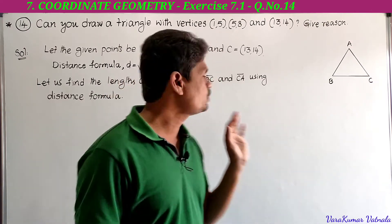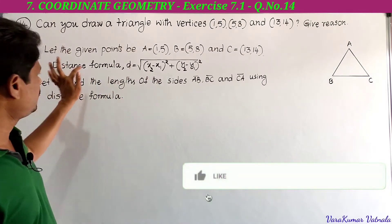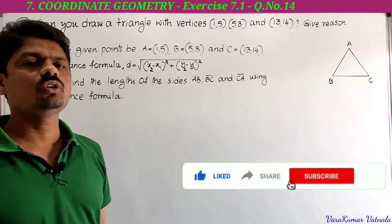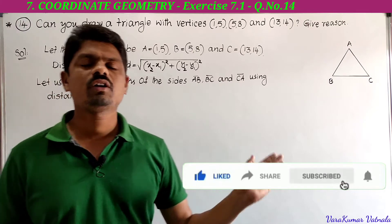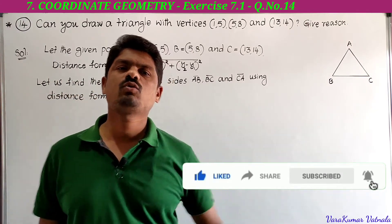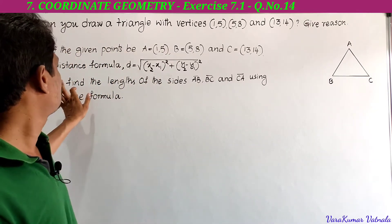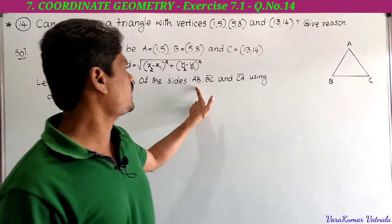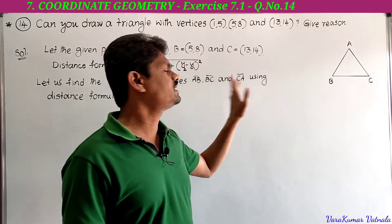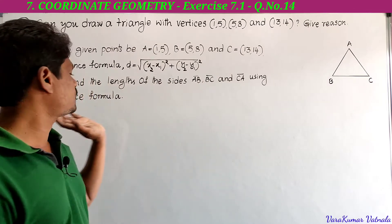Using the distance formula, D = √[(x₂ - x₁)² + (y₂ - y₁)²], we need to find the lengths of sides AB, BC, and CA.